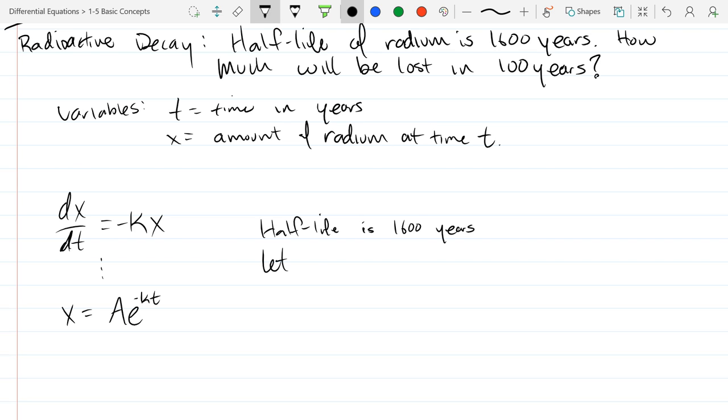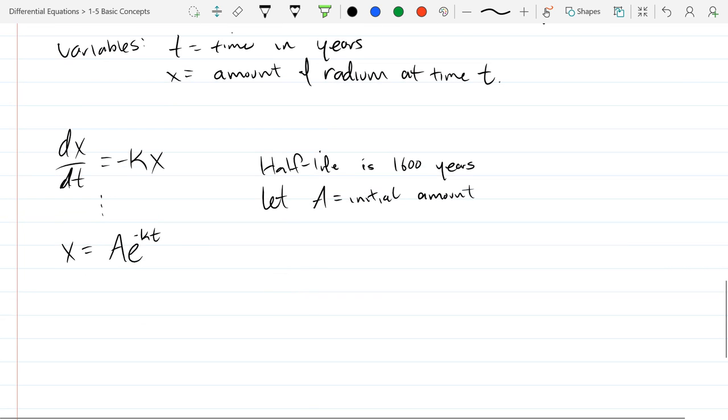So a is the initial amount. And we don't know what it is. There's no way to determine how much we're starting with. So all we see is how much is going to decay, or the amount that's going to decay. x is really a function of t, so you can write it as x(t). That will be better for our notation. So we see x(0) equals a without knowing anything, just plugging in 0 for t.